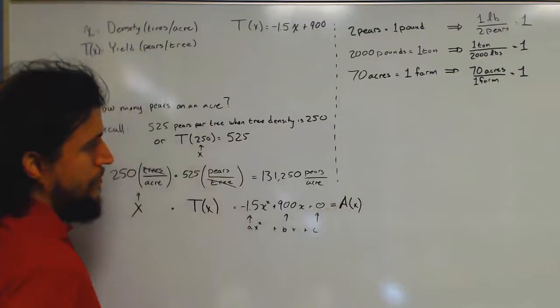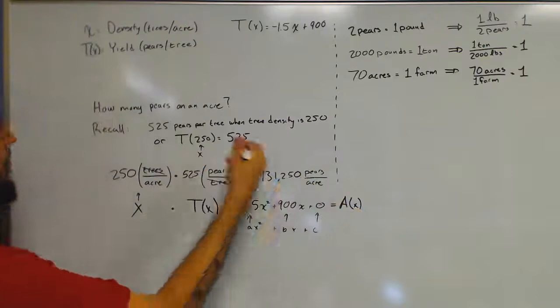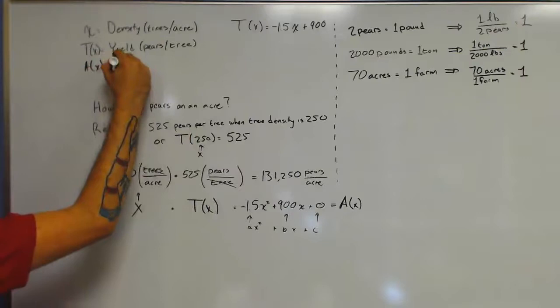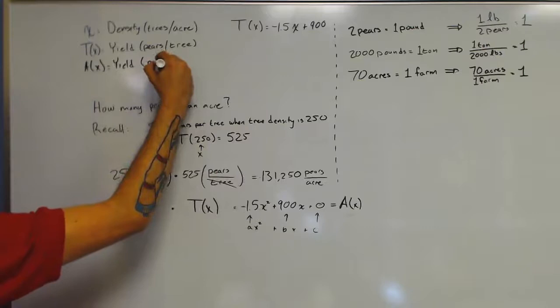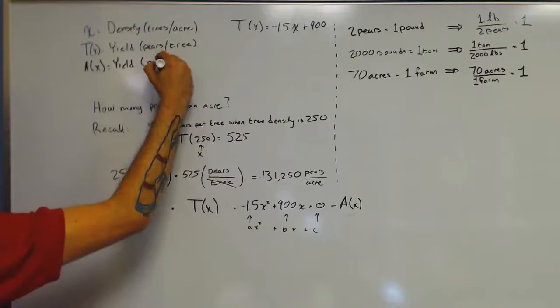We're going to call that A of x because it's in terms of pairs per acre, and so I'm going to add that to my little table up here that tells me what all my variables represent. So this function still spits out a yield, but it's going to put it in different units. And so rather than pairs per tree before, we're going to have pairs per acre.